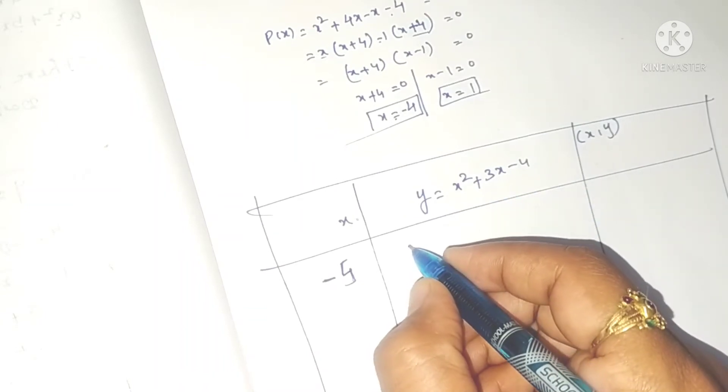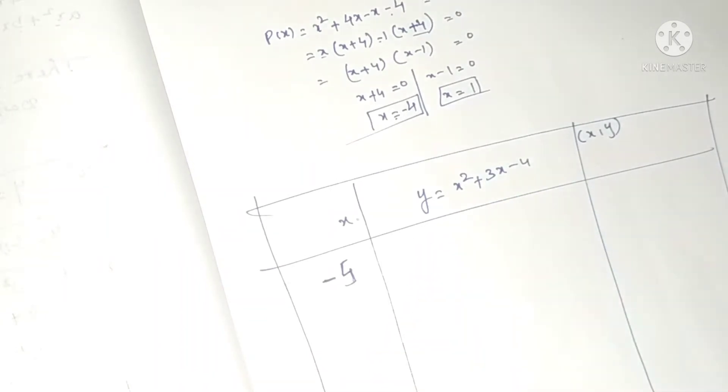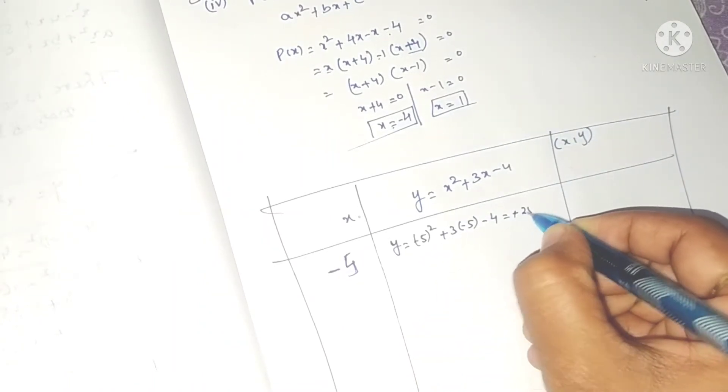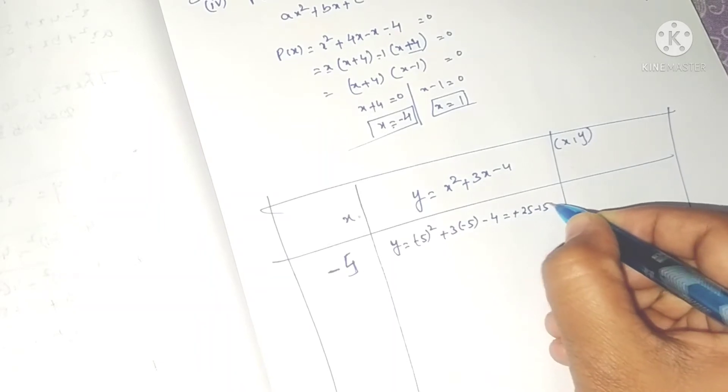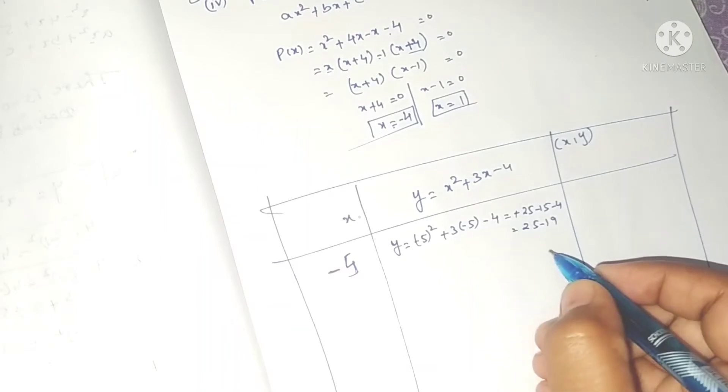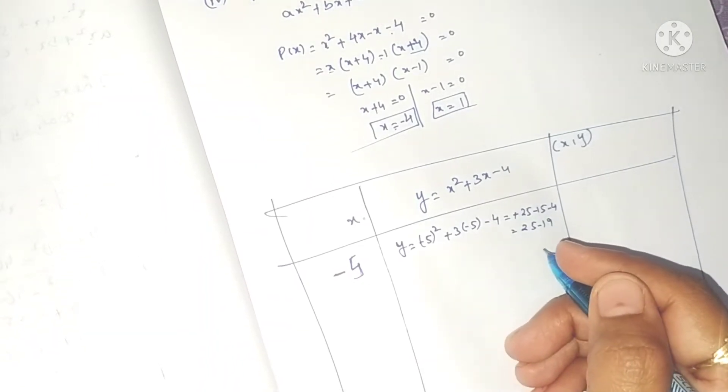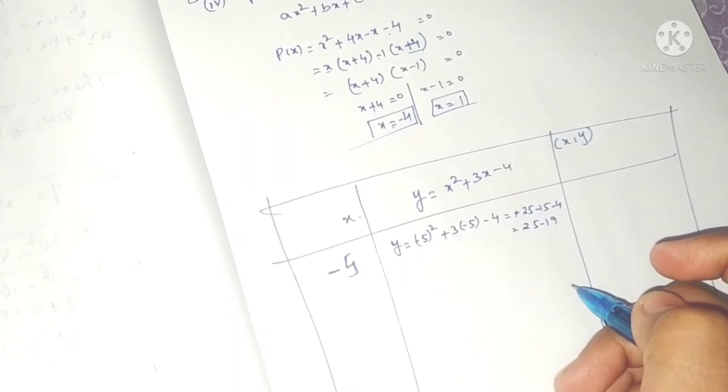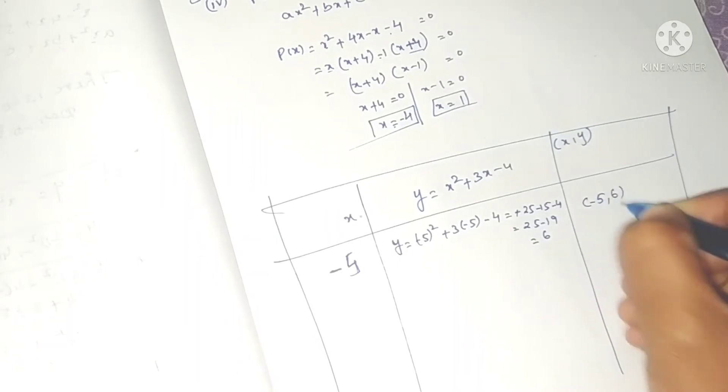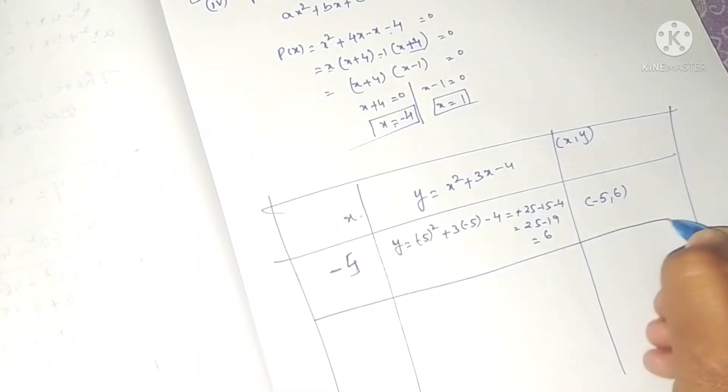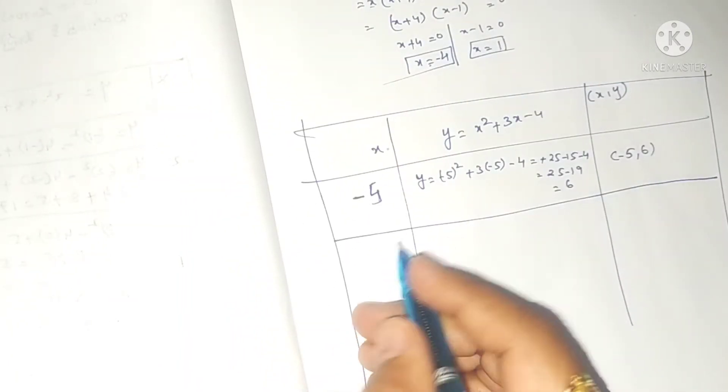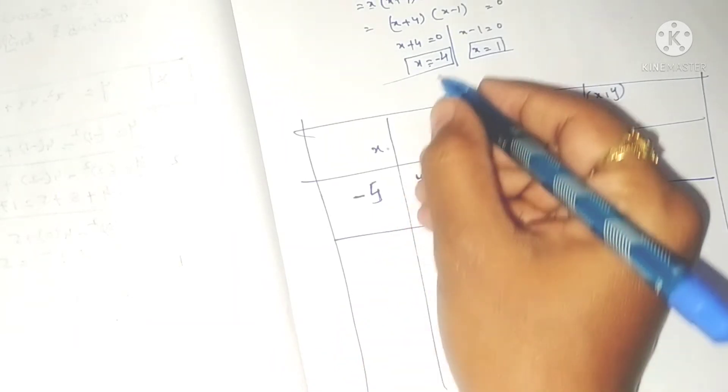First, let's take x equals minus 5. Substituting into the equation: minus 5 whole square is plus 25, plus 3 into minus 5 is minus 15, minus 4. So 25 minus 19 equals 6. The point is minus 5 comma 6.